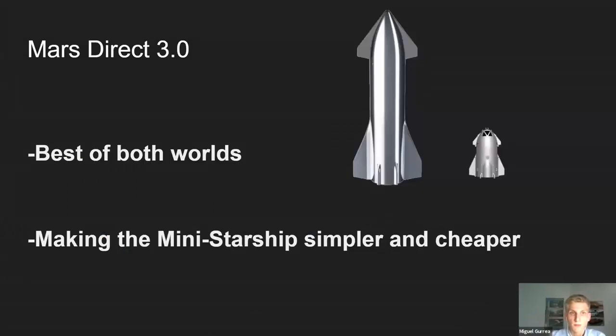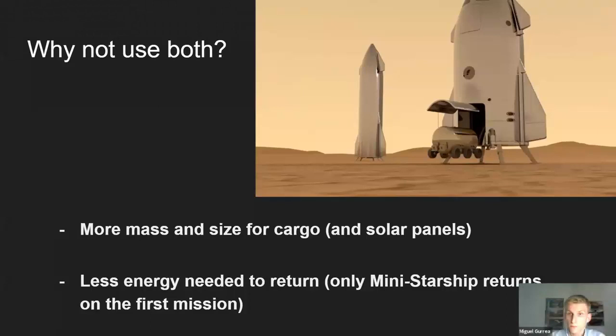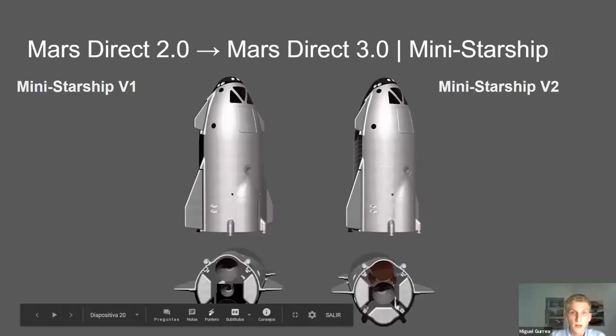Now let's start with Mars Direct 3.0. The first concept is 'best of both worlds' — making the mini Starship simpler and cheaper. Why not use both ships? SpaceX has already said they're planning on leaving the first Starships on the surface. So why not use the bigger Starship for cargo and the smaller Starship for crew? That way you can have more volume and mass of equipment, and need less power and less fuel to refuel the mini Starship.